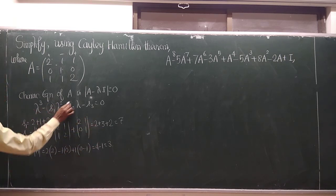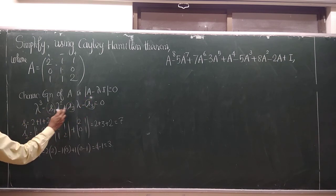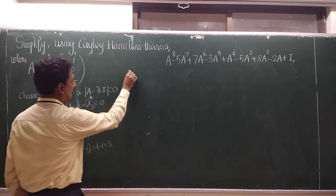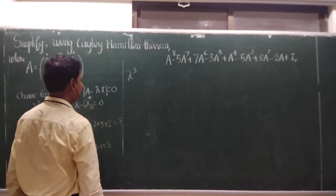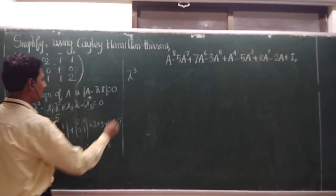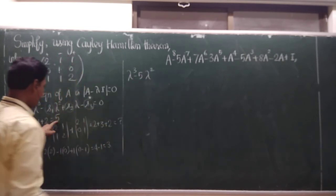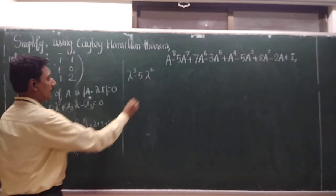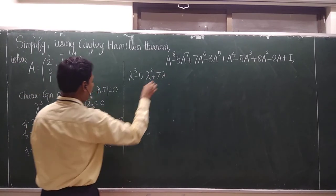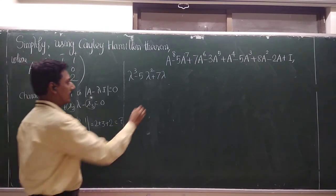So we will substitute in the place of S1, S2, S3. This is plus, minus, plus, minus alternatively. So what we will get? We will get lambda cube. What about S1? S1 is 5. So minus 5 lambda square plus S2, S2 is 7. So 7 lambda. And what about S3? S3 is 3. So minus 3.